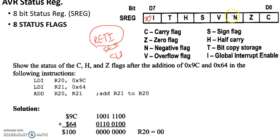The negative flag is analogous with the sign bit of the 8085. The result's MSB being 1 sets this flag.